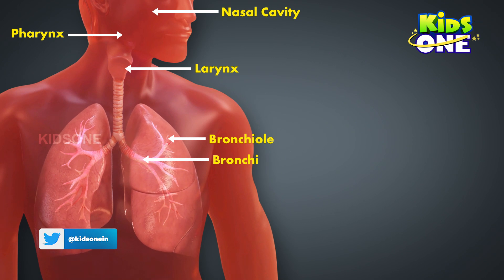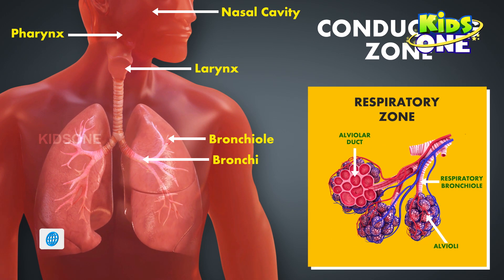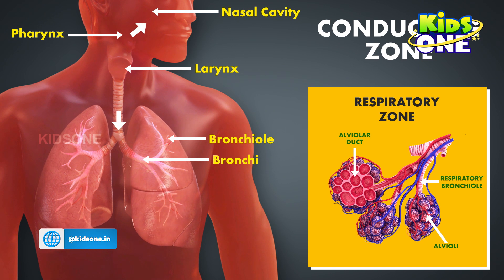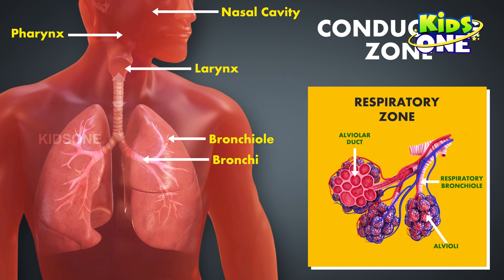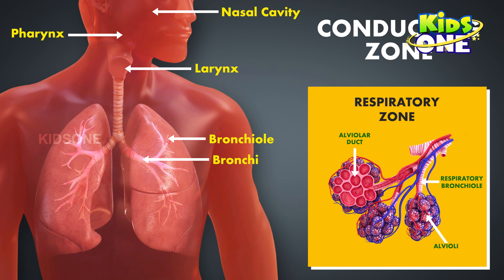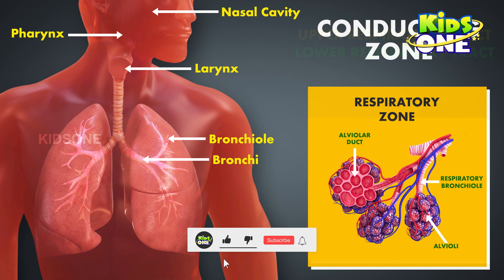The respiratory system can functionally be divided into a conducting zone and a respiratory zone. The conducting zone forms a continuous passage of air moving in and out of the lungs, and this includes the nose, the pharynx, the larynx, the bronchi, and the bronchioles. The respiratory zone is found deep in the lungs and is involved in gaseous exchange, including the respiratory bronchioles, the alveolar ducts, and the alveoli — the air sacs wide enough to allow gaseous exchange.